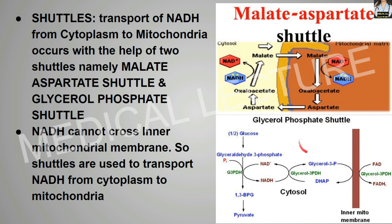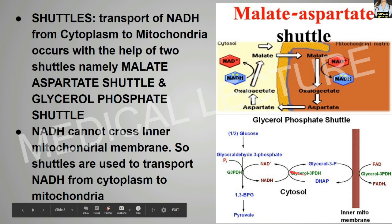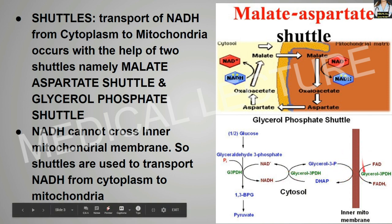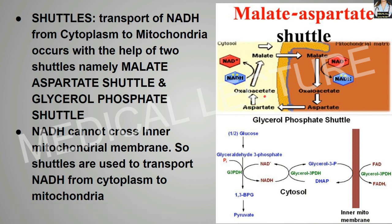The same thing occurs with the glycerol phosphate shuttle. Glycerol 3-phosphate takes the hydrogen from NADH and transports this hydrogen of NADH inside the inner mitochondrial membrane, converting itself into DHAP. These are the two shuttles which help in the transportation of the hydrogen ion from outside to inside via NADH.